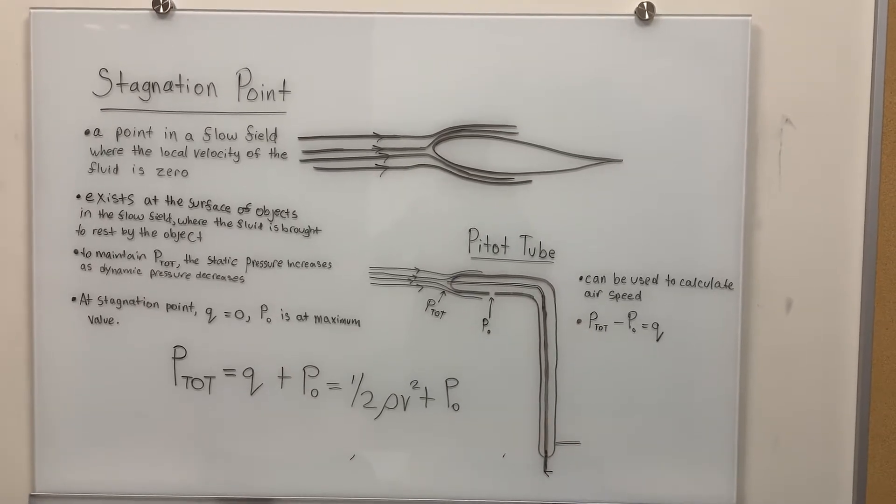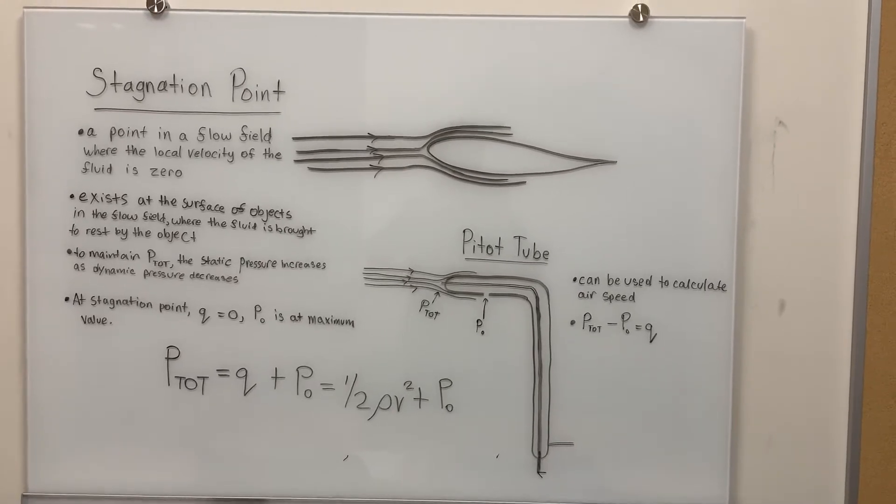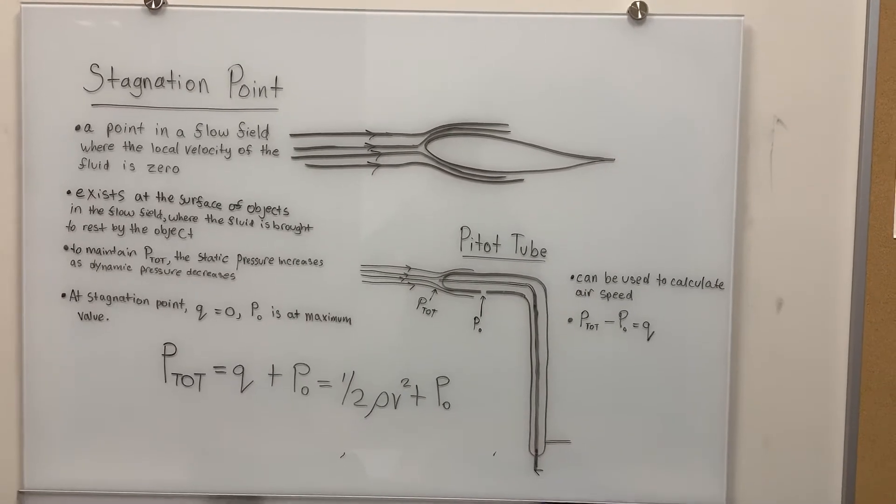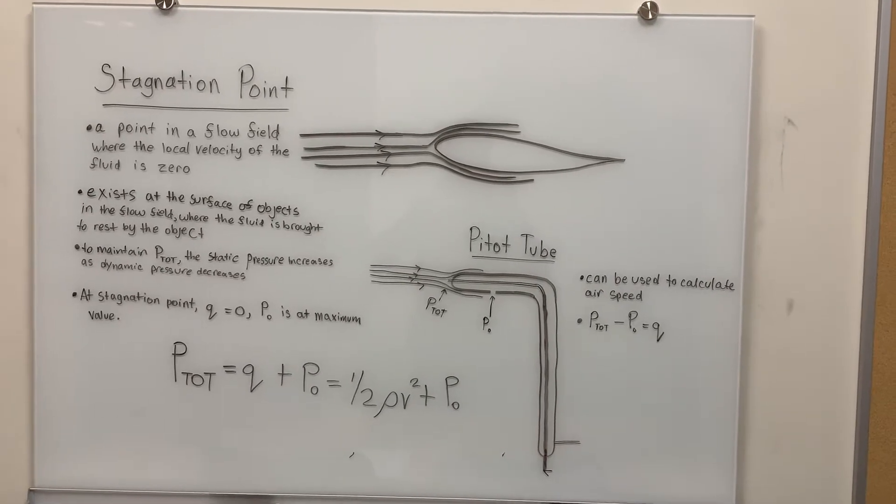If the direction of the fluid is diverted, at the center of the fluid where the air meets the airplane wing, the velocity of the air is zero. This is the stagnation point.